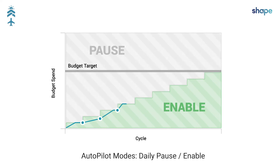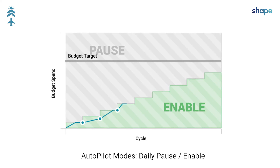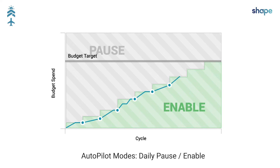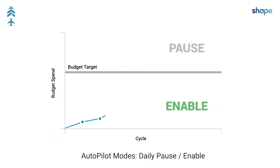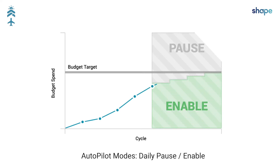If the budget target is changed mid-cycle, new daily targets will be established and campaign status will be changed accordingly. If the Daily Pause Enable mode is activated mid-cycle, the daily targets will be established based on your current spend position relative to your budget target.